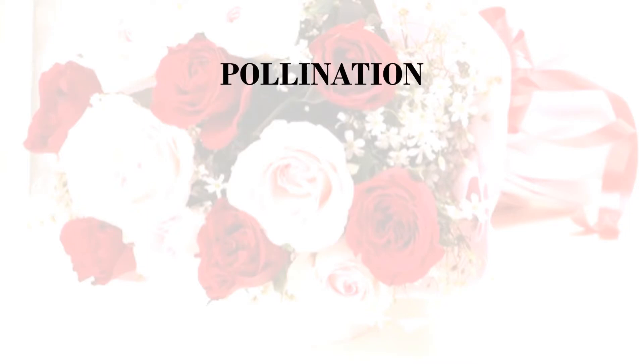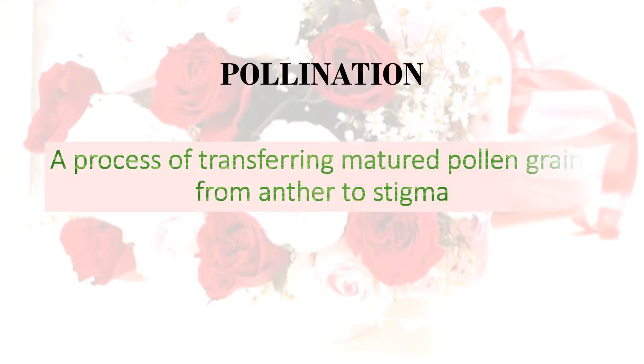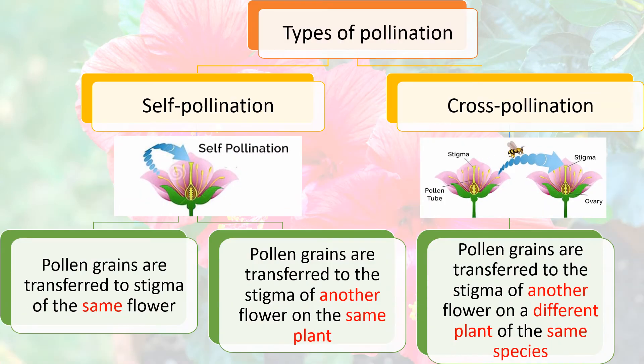The function of a flower in a plant is actually to carry out pollination. So what is pollination? Pollination is the process of transferring matured pollen grains from the anther to the stigma. There are two types of pollination: self-pollination and cross-pollination.